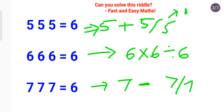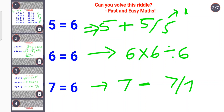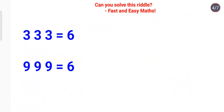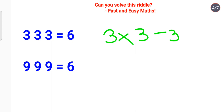Now coming to a trickier one: 3, 3, 3, which is supposed to equal 6. For this we do 3 multiplied by 3 minus 3. Three times 3 gives 9, and minus 3 makes it equal to 6.